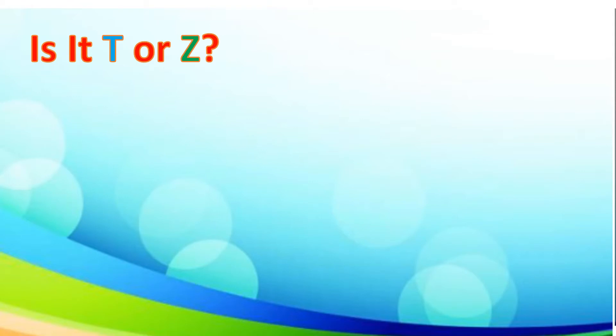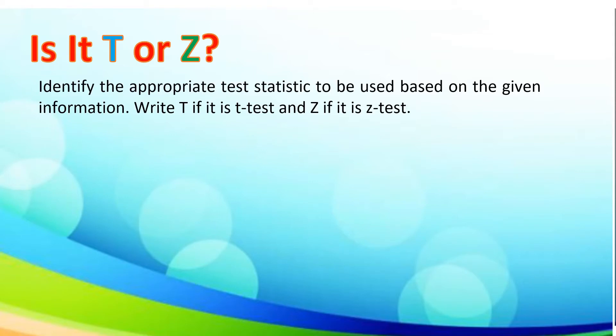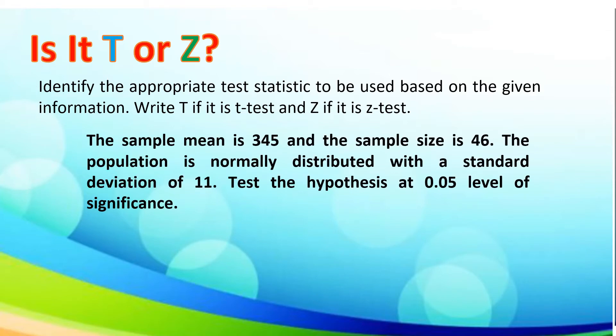Now, let us begin with an activity entitled 'Is it T or Z?' Here, let us identify the appropriate test statistic to be used based on the given information. Write T if it is T-test and Z if it is Z-test. The sample mean is 345 and the sample size is 46. The population is normally distributed with a standard deviation of 11. It has the hypothesis at 0.05 level of significance.